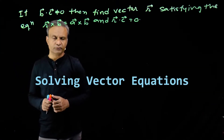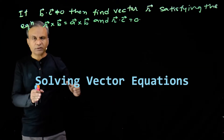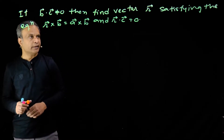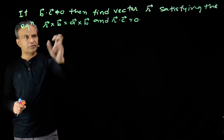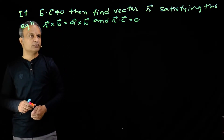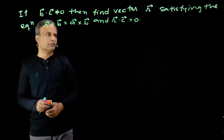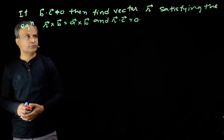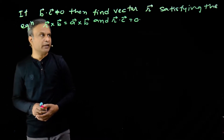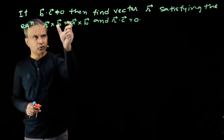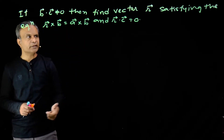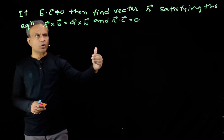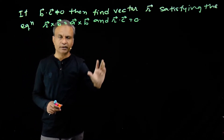We have one category of equations in which we solve the given vector equation to find the required vector. Like we have here this vector equation r cross b is equal to a cross b, along with this it is given that r dot c is equal to 0 and b dot c is not equal to 0. We have to find vector r in terms of vectors a, b and c.